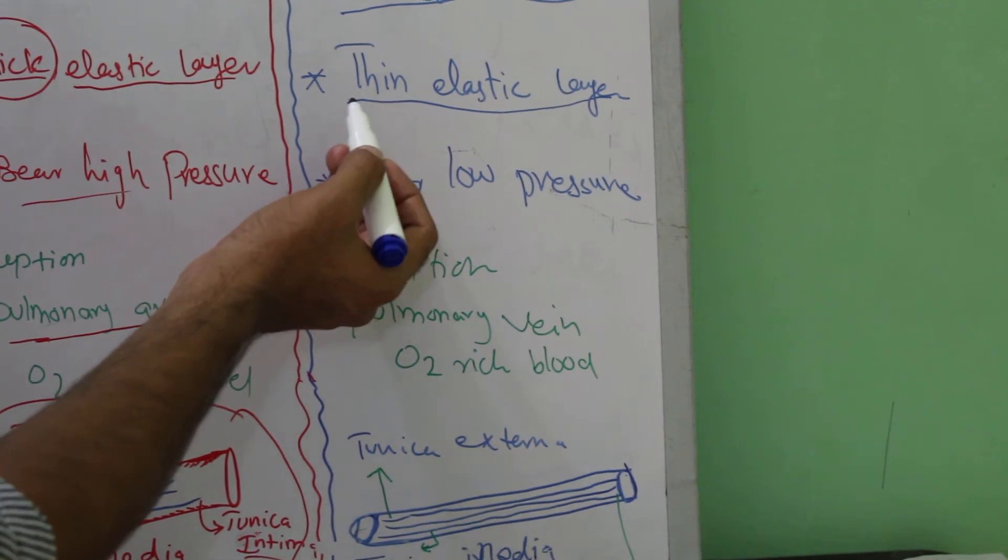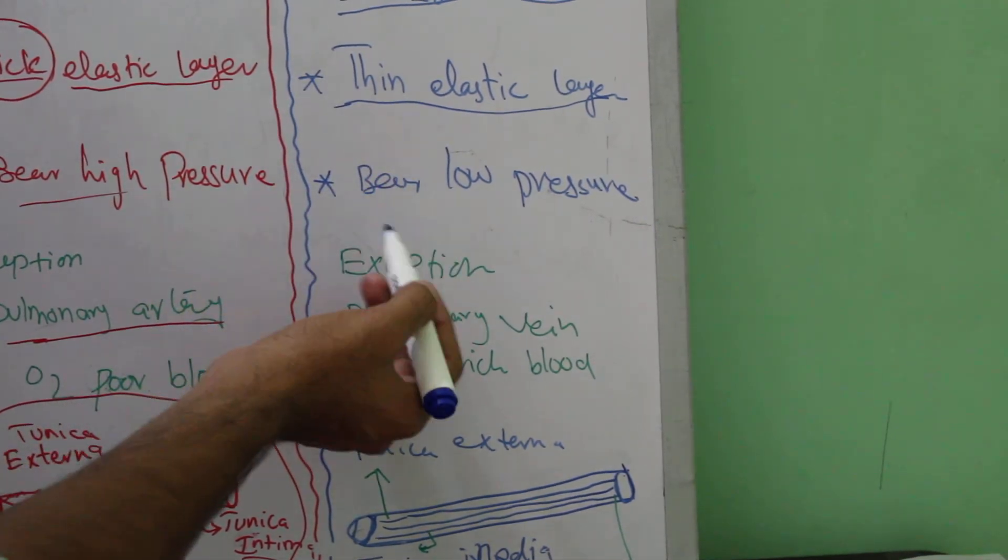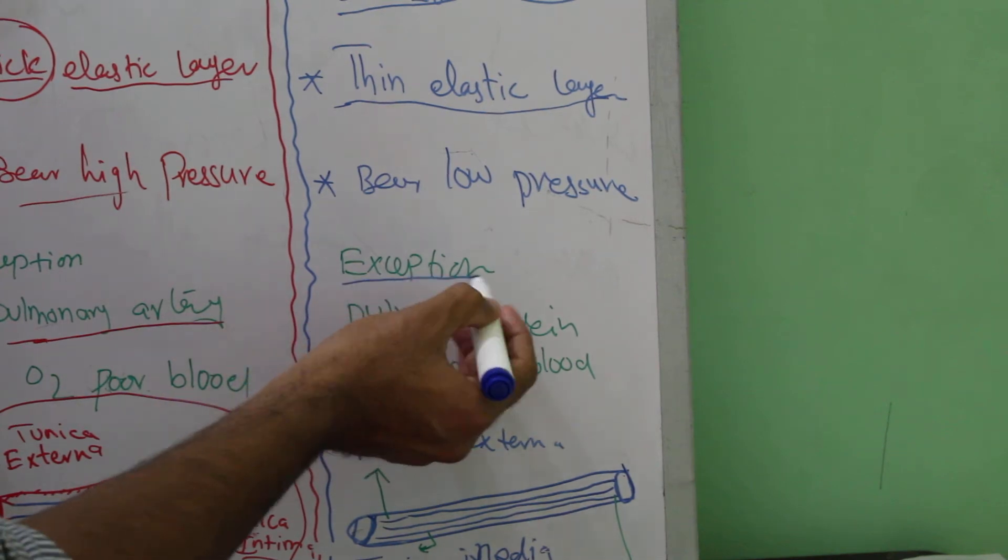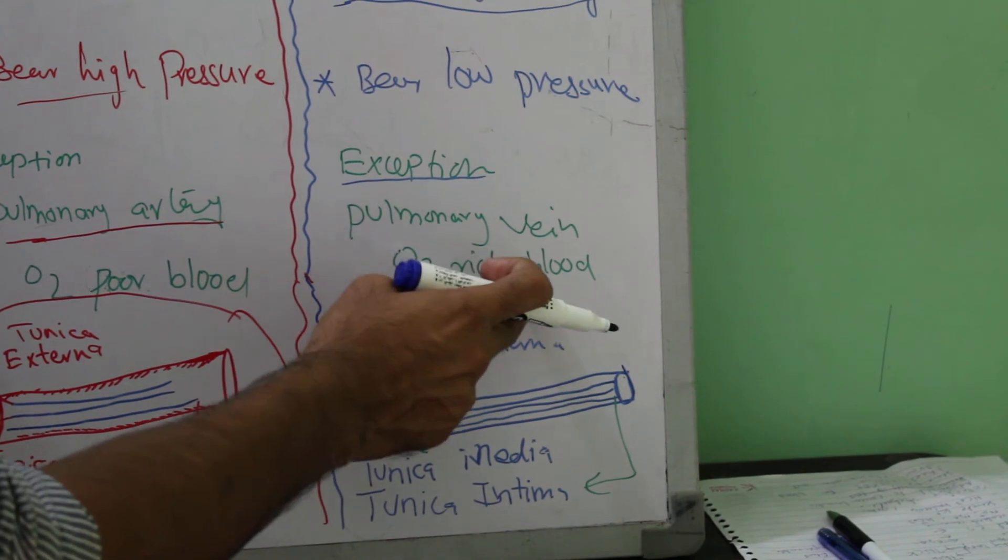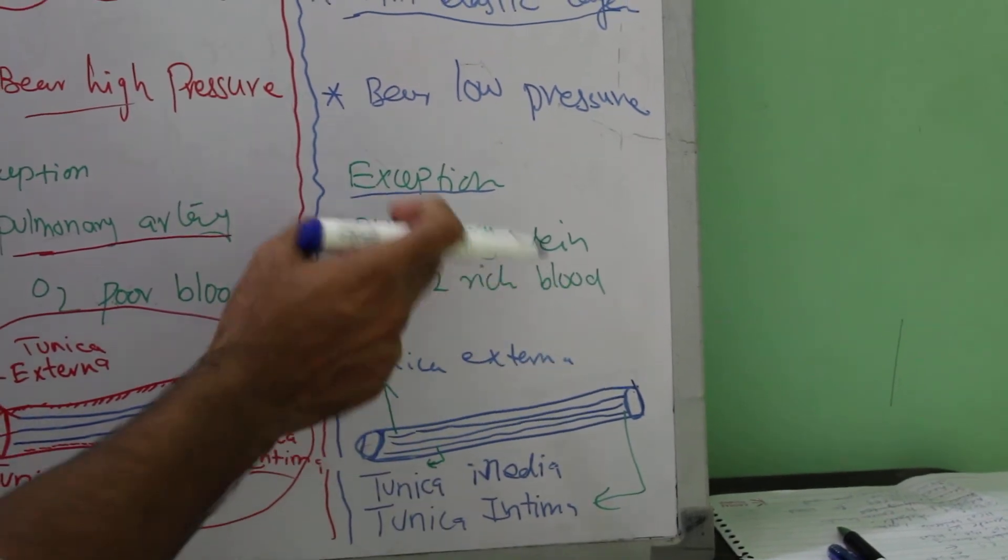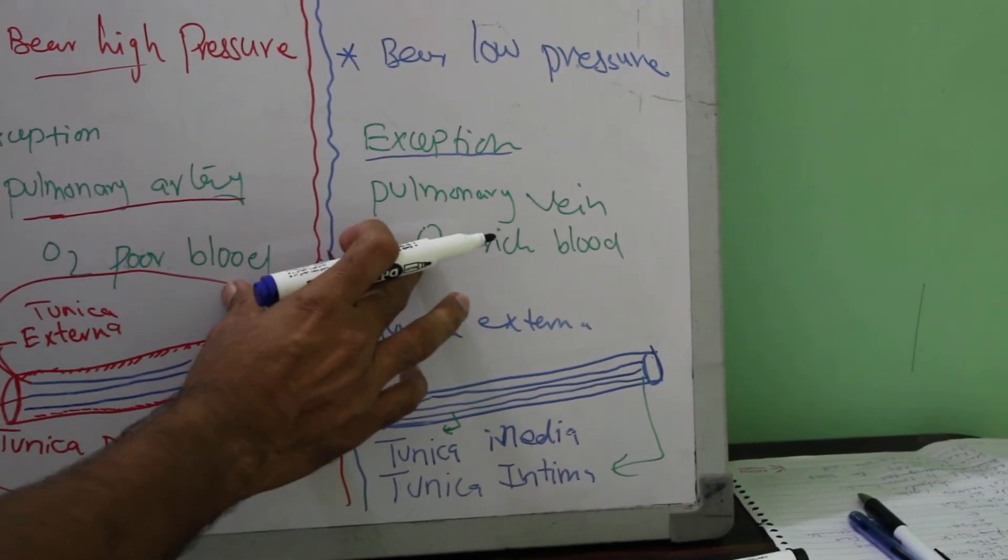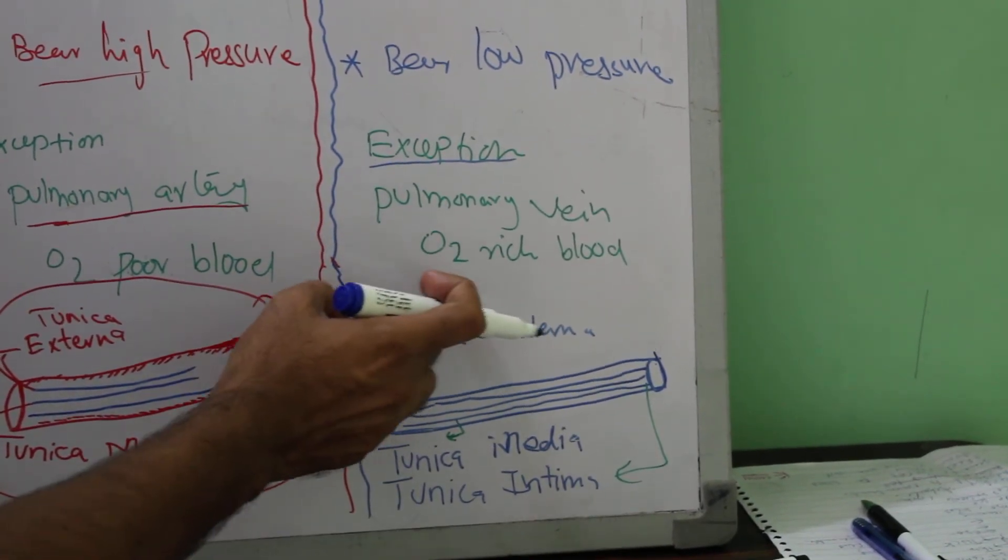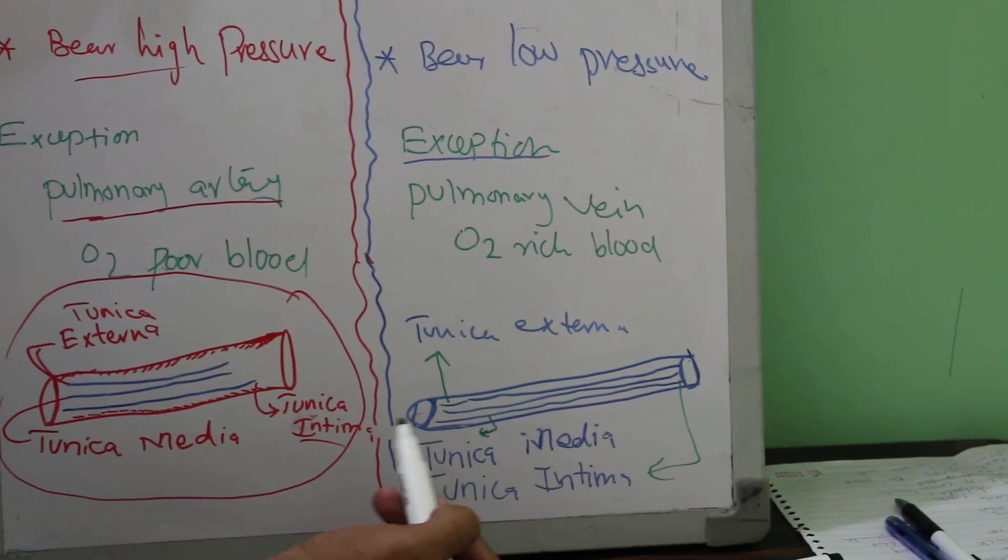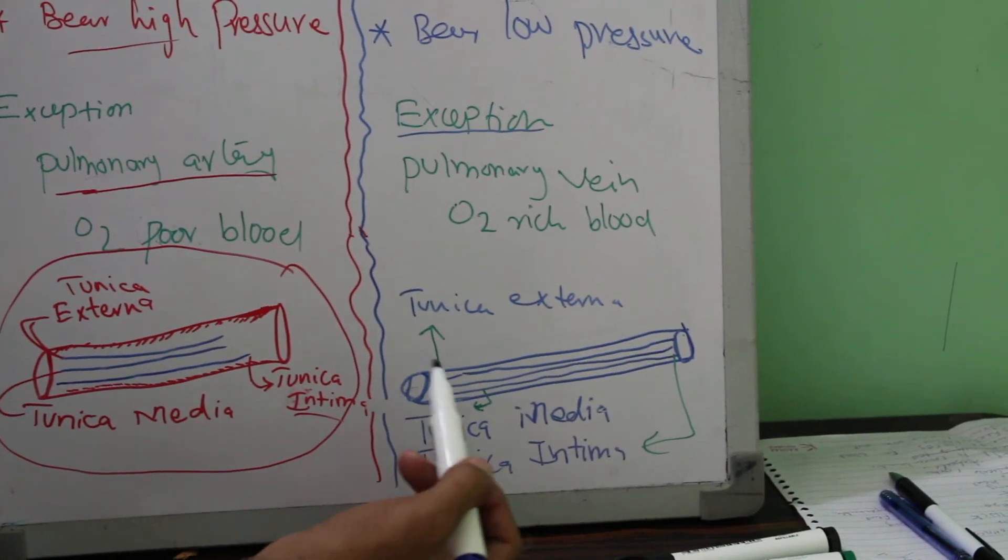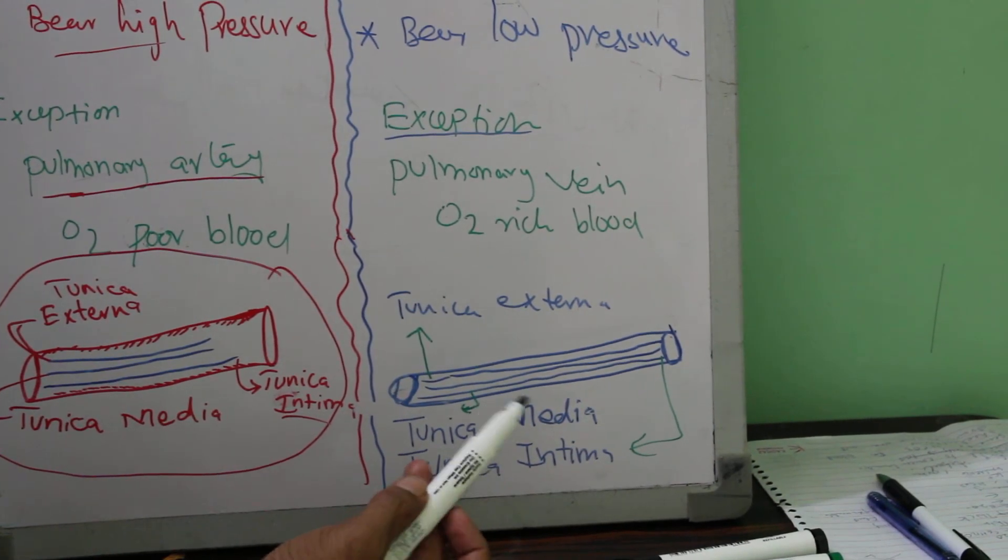But there is one exception you should know about the veins. The pulmonary vein is rich in oxygen, and the exception relates to embryology. The structure of both are the same except the veins are thin and the arteries are thick. The names of layers are the same: tunica externa, tunica media, tunica intima.